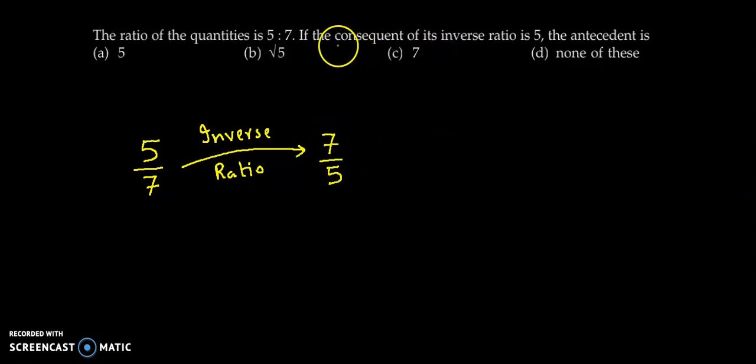Now here we have that the consequent is 5. Yes, this is the consequent of the inverse ratio and we have been asked the antecedent.